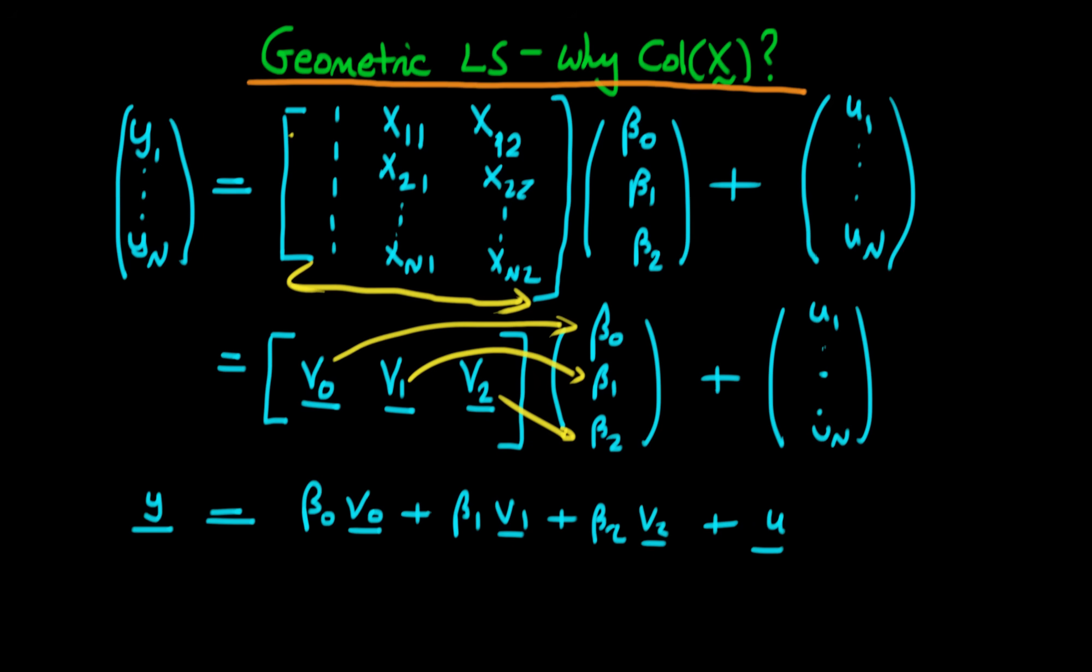So when you write it out in this form, it becomes quite apparent what the role of the parameters is. Essentially, what the parameters do, beta naught through beta 2, is they tell us how much of this particular vector, and this particular vector, and this particular vector do we need to get as close to Y as possible.